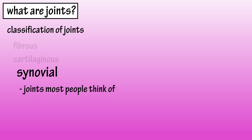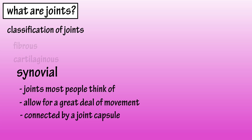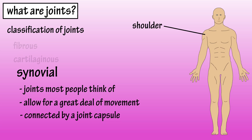Synovial joints are the most complicated joints in the body, and they're the types of joints that most people think of when they think about joints. Synovial joints allow for a great deal of movement, and the bones of a synovial joint are connected by a joint capsule, such as the shoulder, knee, and elbow joints.